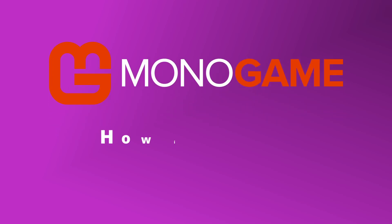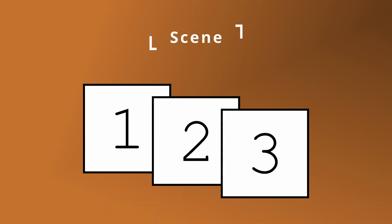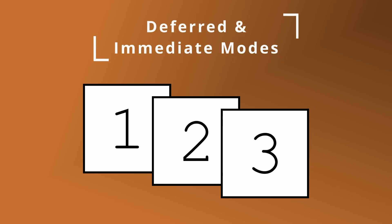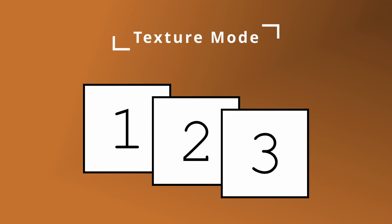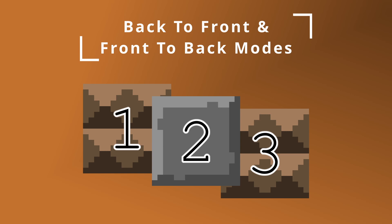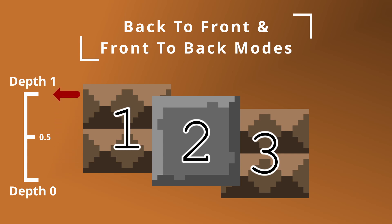The first thing we need to understand is how MonoGame, the framework I'm using, draws things. It has a few different modes for drawing. Say we've got a scene with three objects — we call the draw function on each object: 1, 2, and 3. Deferred and immediate modes will draw things in the order they are called, so 1, 2, 3. Texture mode draws things grouped by texture, so if object 1 and 3 have the same texture, then the draw order is 1, 3, 2. Finally, back to front and front to back modes draw things using a depth value — objects are sorted by their depth value and then drawn.